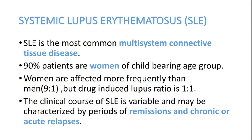SLE is one of the most common multi-system connective tissue disorders. It is mainly seen in women, especially in the childbearing age group. The women to men ratio is around 9 to 1. SLE can present as an acute complication, a chronic disease, or acute on chronic inflammation, with a remission and relapse sequence.